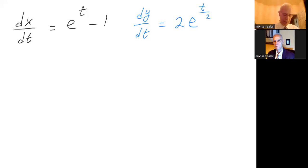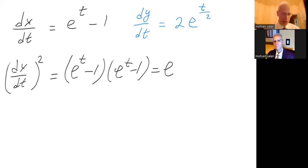Now I have to square this, so I have dx dt squared equals e to the t minus one times e to the t minus one, so that I have e to the two t minus two times e to the t plus one. And dy dt quantity squared gives me four times e to the t.